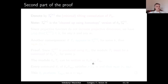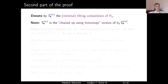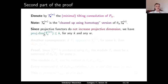Part 2 of the proof: denote by T^W the minimal tilting co-resolution of P_W. We do not claim this is a linear complex of tilting modules, but it can be obtained from T^E using projective functors — we apply projective functors and clean up the resulting complex using homotopy. Since projective functors do not increase projective dimension, we obtain that the projective dimension of the component T^W_k is at most k, for any k and any W.